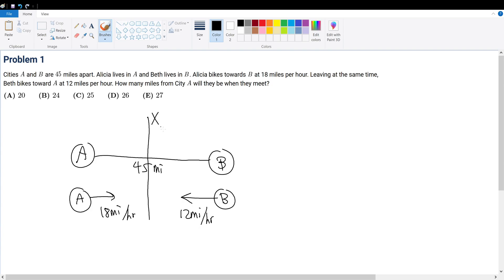Let's assume they meet at distance x from city A. If that distance is x, then the distance from B is 45 minus x. The distance formula is distance equals velocity times time.